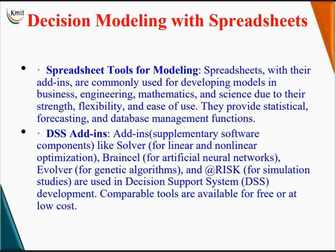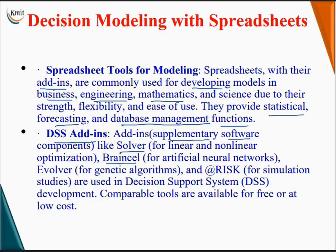Next, decision modeling with spreadsheets. Spreadsheet tools for modeling: spreadsheets with their add-ins are commonly used for developing models in business, engineering, and mathematics. Due to their strength, flexibility, and ease of use, they provide statistical forecasting and database management functions. Add-ins are supplementary software. Add-ins like Solver, BrainCell, Evolver, and Risk are used — these are some of the DSS add-ins.